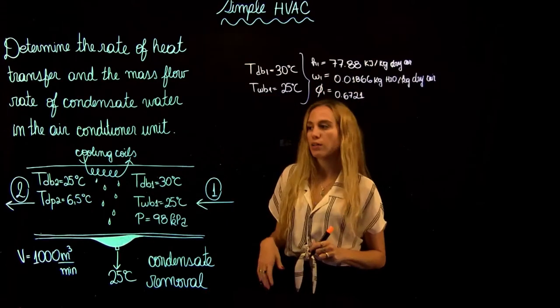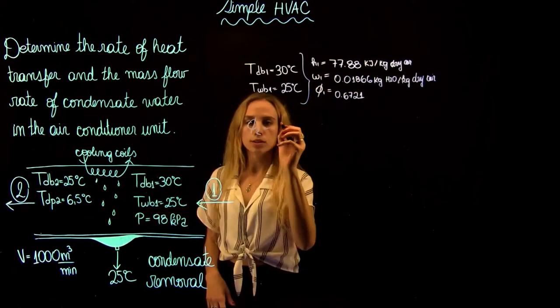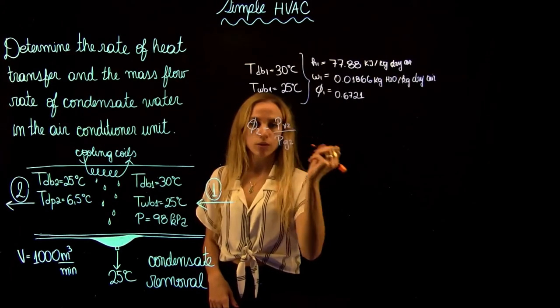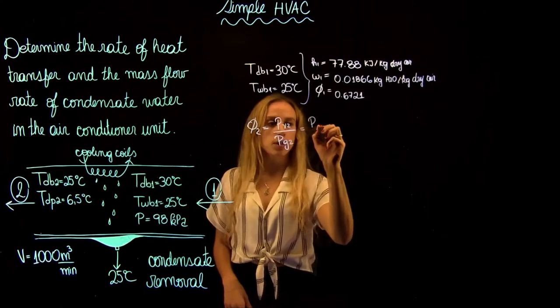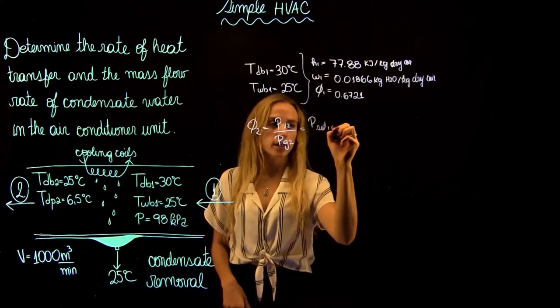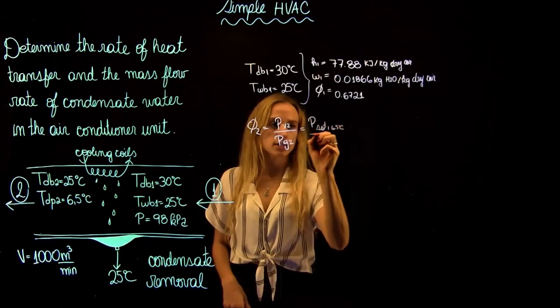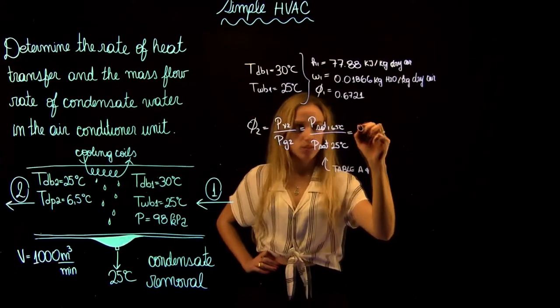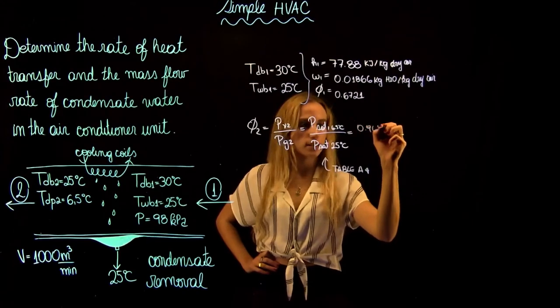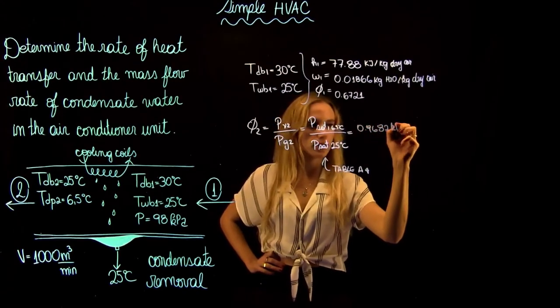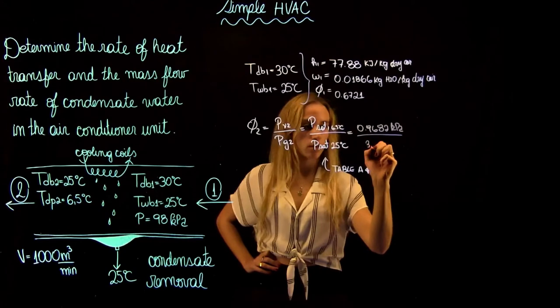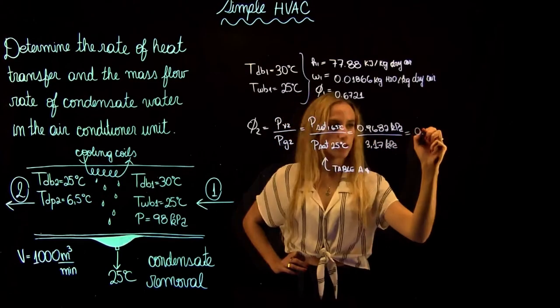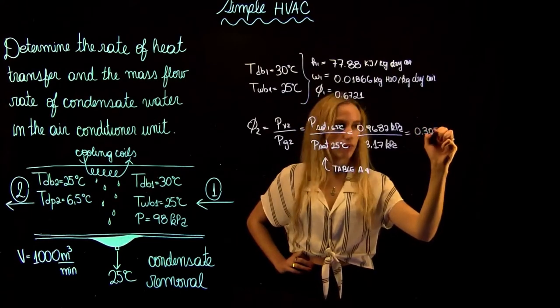Now we need to find the values at state 2 using the partial pressure ratio of water at 2 over the saturated pressure. The vapor is going to be saturated at 6.5 degrees Celsius and we can use table A4. It's going to be 0.9682 kilopascal over 3.17 kilopascal and it's going to equal 0.3054.